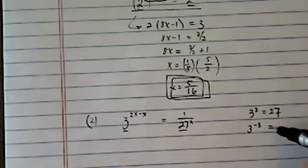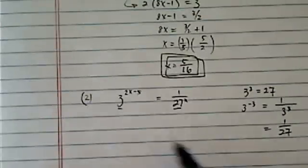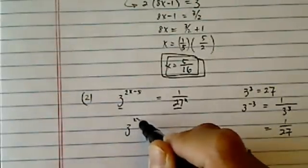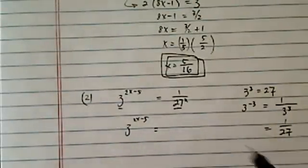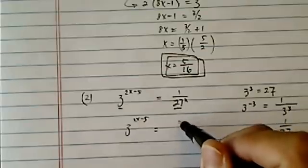Three minus three is one over three to the three, or one over twenty-seven. Hopefully you can see where I'm going with this. So three to the x minus five, not changed, is equal to, let's change this one a little bit.